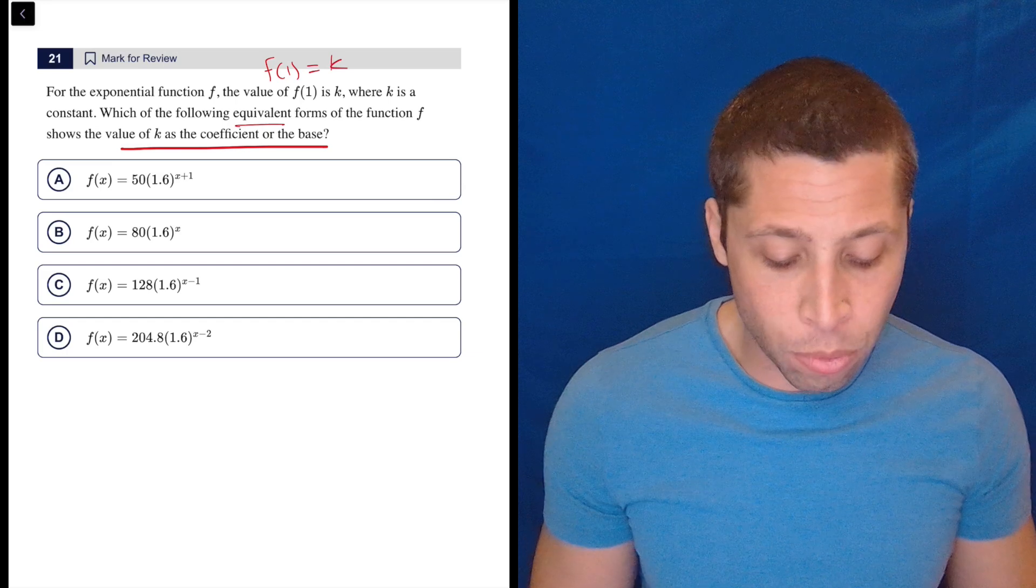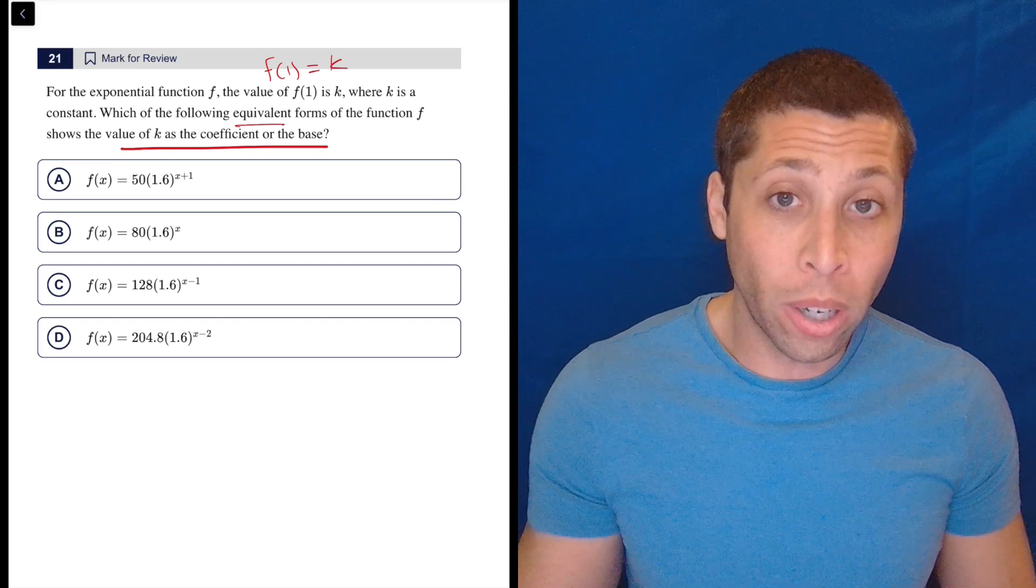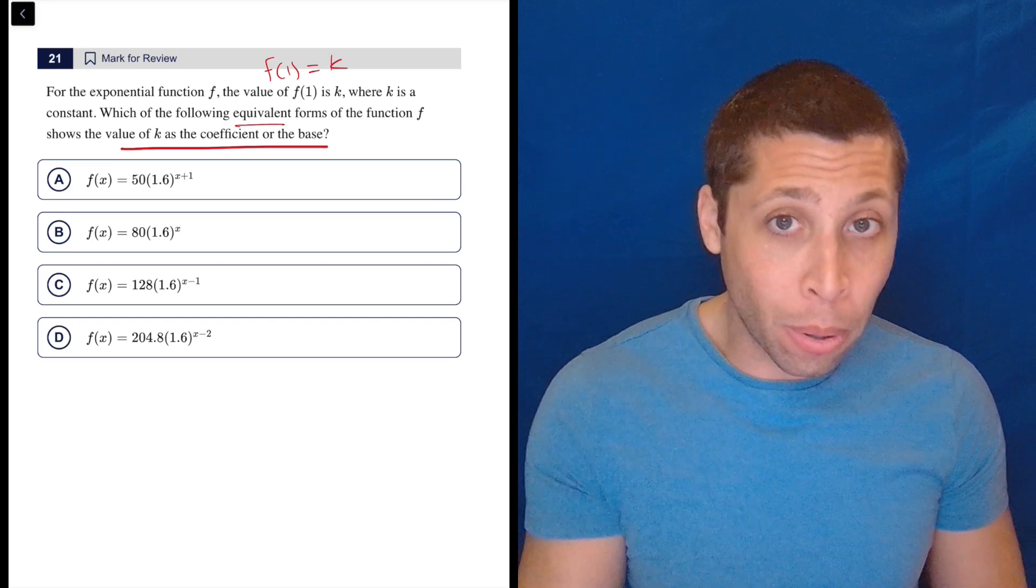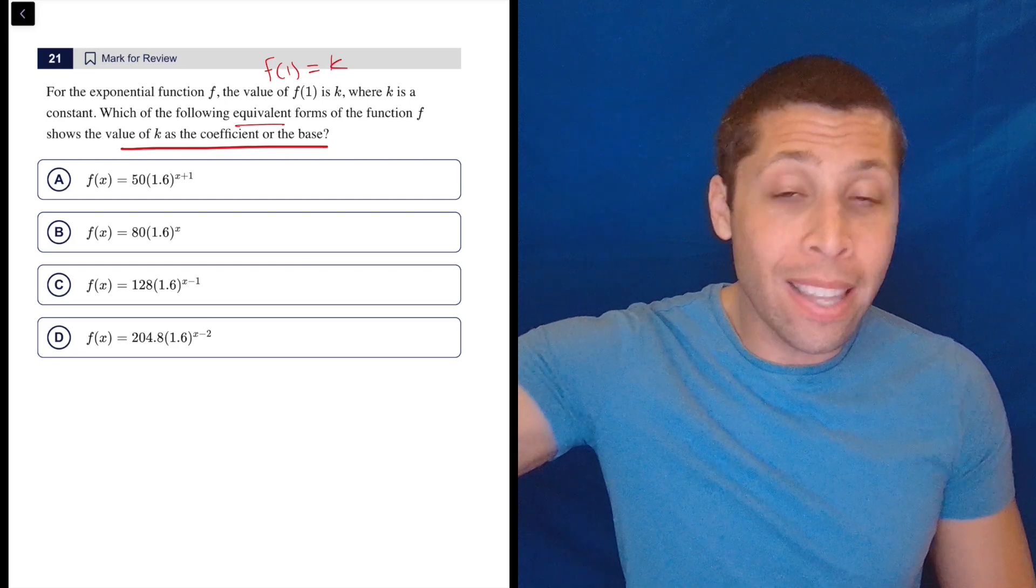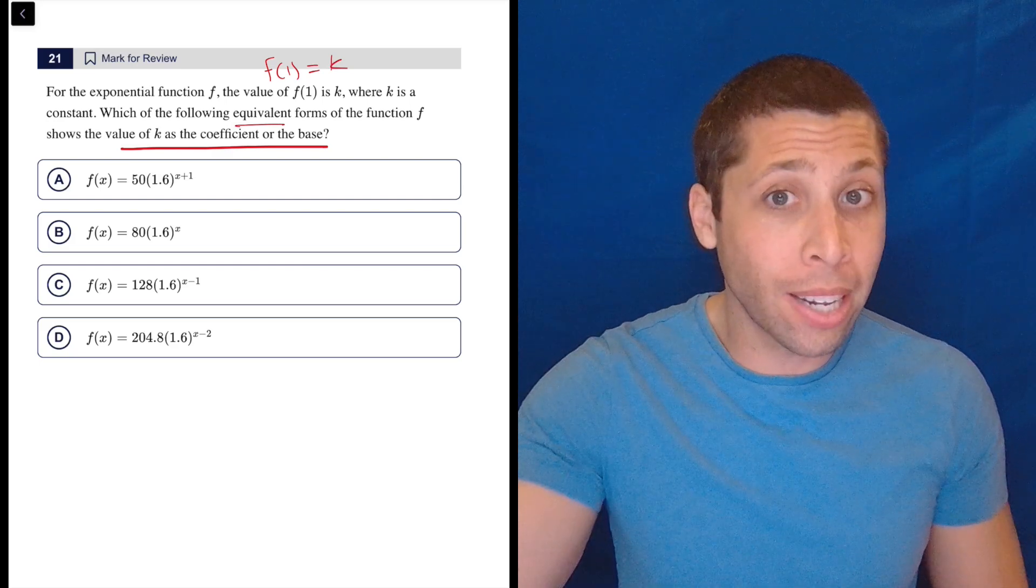So what they're really saying here is when we put in f of 1, we're going to get some number out, and that number should also be in the equation. So when we get to the right answer, I think it's going to be obvious.